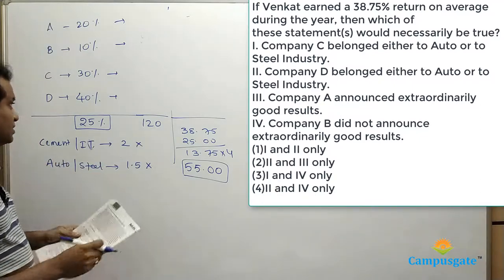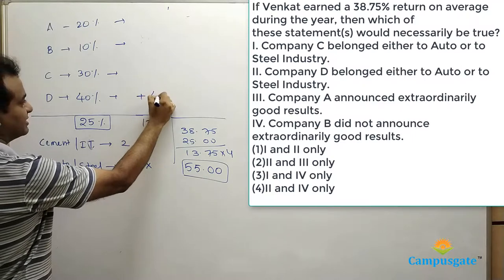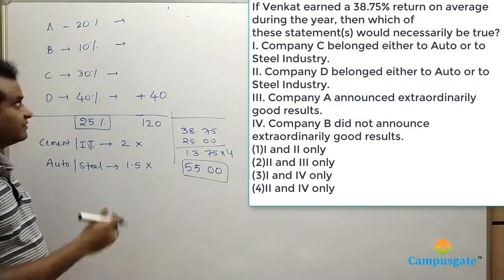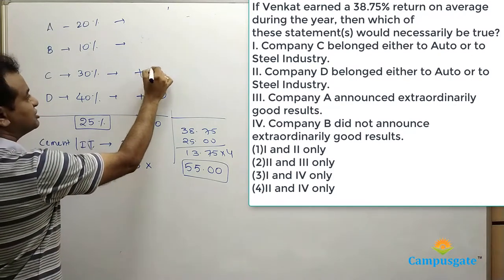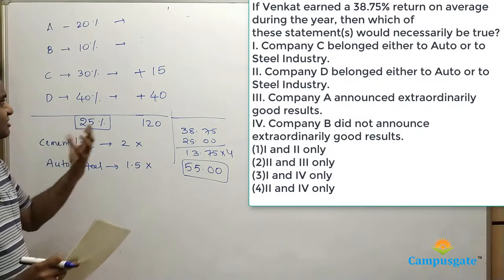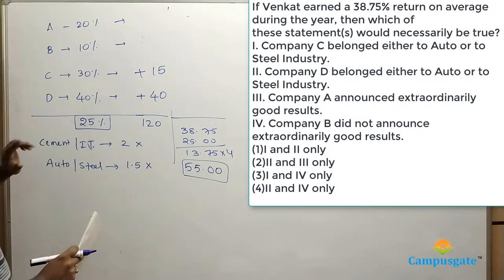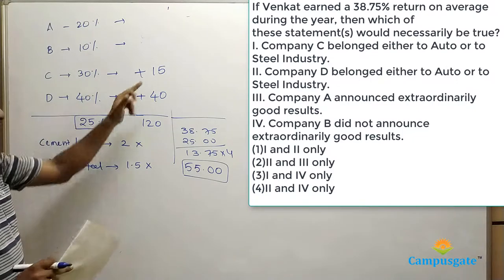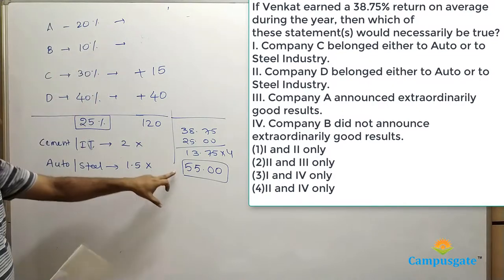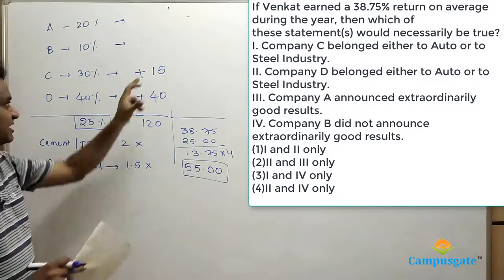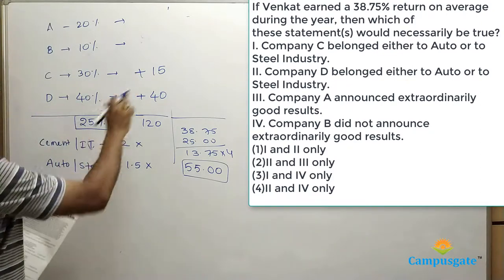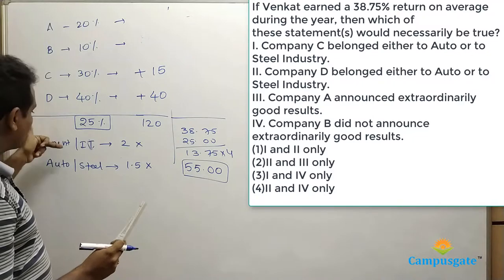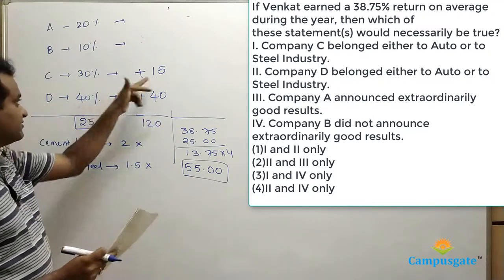How do we achieve 55% extra? Suppose company D announces extraordinary good result belonging to cement or IT — giving double the return of 40%, so 40% extra. We still need another 15%. Since 30% halved is 15%, company C belonging to auto and steel announces 1.5 times return giving 15% extra. That achieves 40 + 15 = 55%. There is only one way to achieve this: D belongs to cement or IT giving double return, and C belongs to auto and steel giving 1.5 times return.